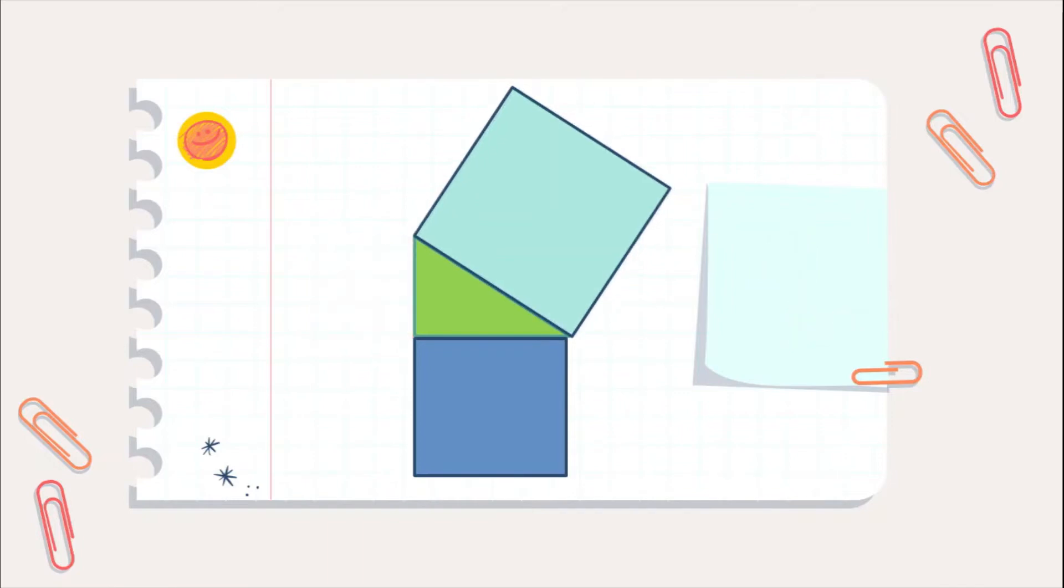Now, what we will do is, we will move this small square and place it on the bigger square. Now, what about this blue square? For this, first of all, you draw a parallel line.